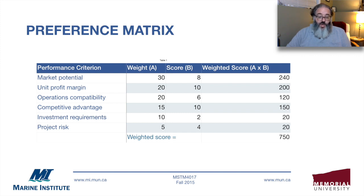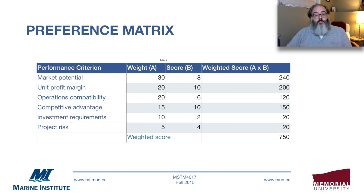Then we have the weight. The simple way to do weights so that it all works out is to have all the weights add up to 100 — that's just the easiest way to do it. You can use other more complex schemes, but that's the easiest. You multiply the weights by the scores you gave and you get a weighted score, then add it all up.